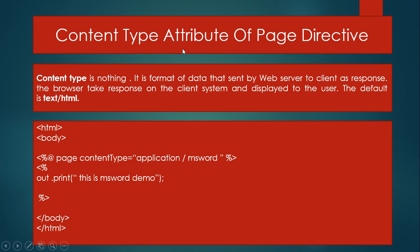In this slide, we discuss the content type attribute of the page directive. Content type is the format of the data sent by the web server to the client as a response. The browser takes the response on the client system and displays it to the user. The default is text/HTML. In this example, the page directive uses the content type attribute passing the value application/msword, meaning the information will be opened in MS Word.